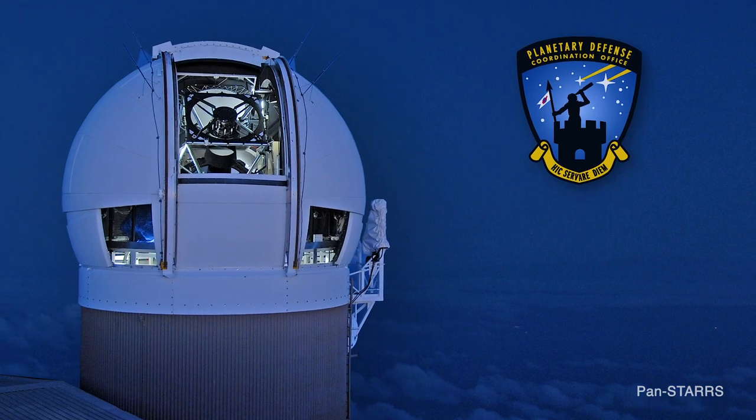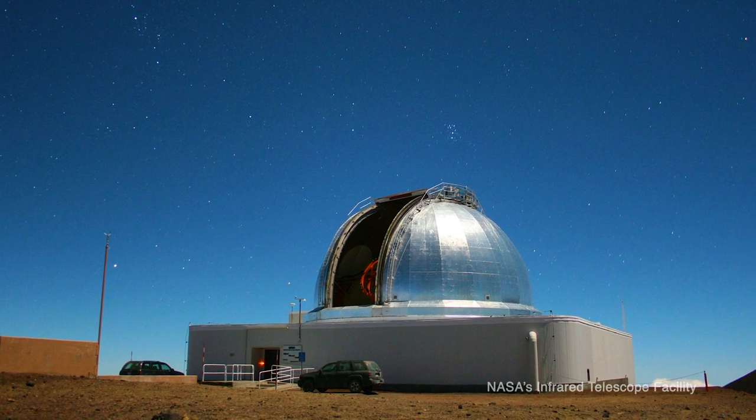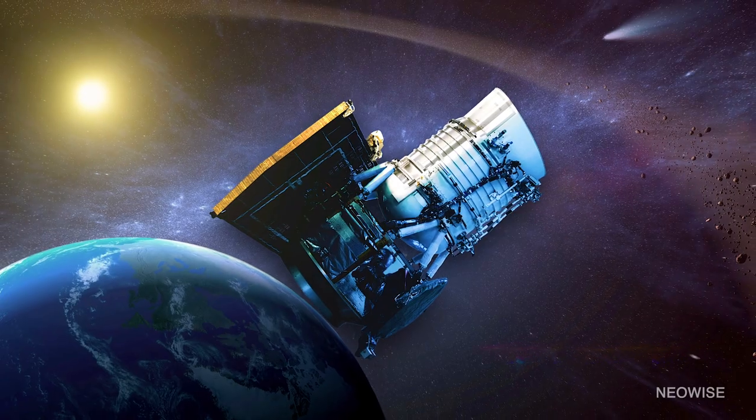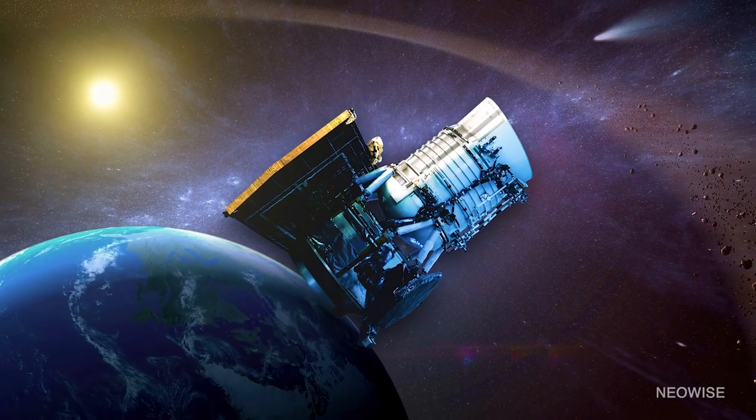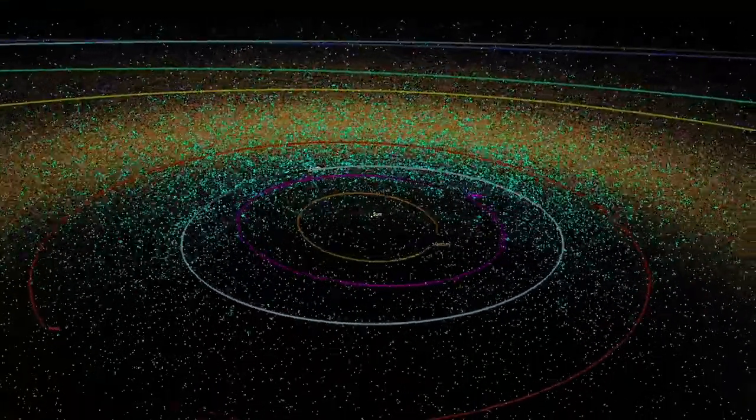The Space Agency has a Planetary Defense Coordination Office that maintains watch for asteroids and comets coming close to Earth in order to warn of any potential impacts. Along with its partners, they discover, catalog, and characterize these bodies.